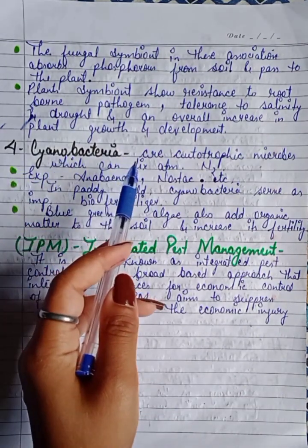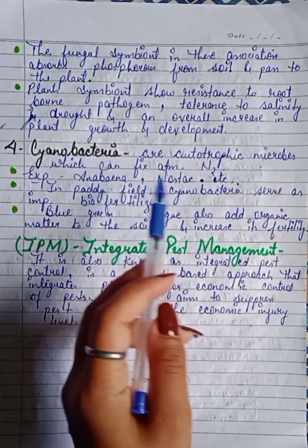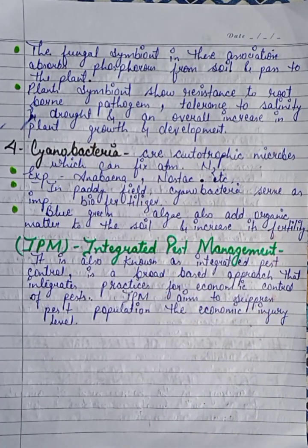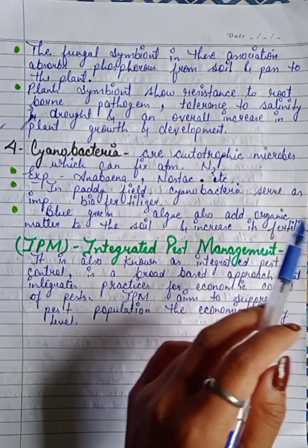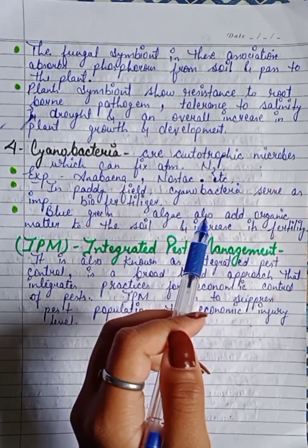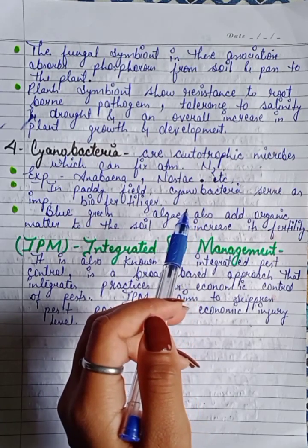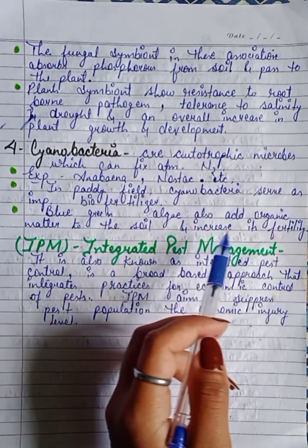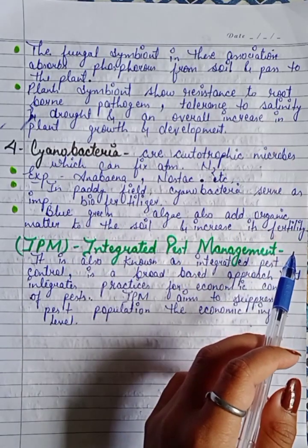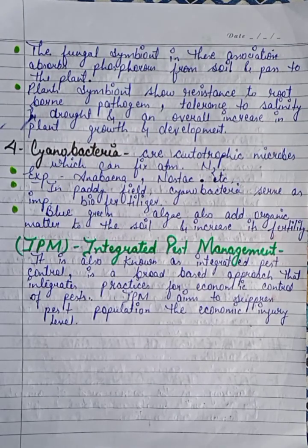Fourth is Cyanobacteria. Cyanobacteria are autotrophic microbes that can fix atmospheric nitrogen — for example, Anabaena and Nostoc. In paddy fields, cyanobacteria serve as important biofertilizers. Blue-green algae — which is the same as cyanobacteria — also add organic matter to the soil and increase its fertility.